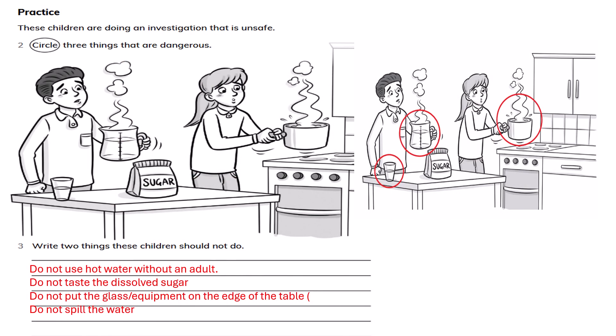These children are doing an investigation that is unsafe. Circle three things that are dangerous and write two things these children should not do. The two things are: do not use hot water without the supervision of an adult, and do not taste the dissolved sugar. Others could be: do not put the glass on the edge of the table because it might fall, and do not spill the water.